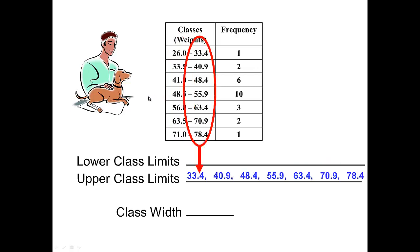The upper class limits indicate that we want all of the numbers that are on the right side because those are the upper or larger numbers in each class. That's 33.4, and 40.9, and 48.4, and 55.9, and 63.4, and 70.9, and then lastly 78.4.